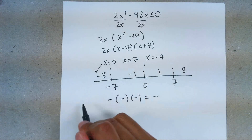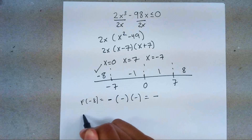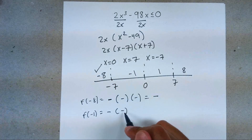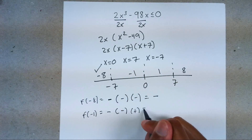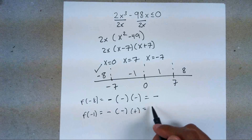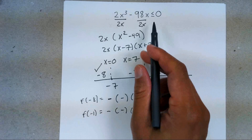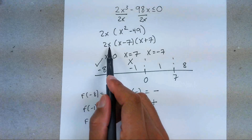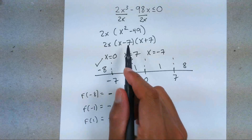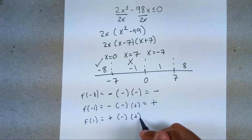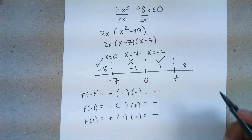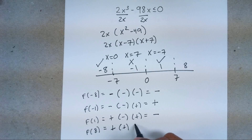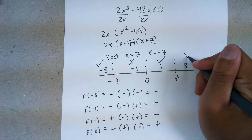Plugging in −1: 2(−1) is negative; (−1 − 7) is still negative; (−1 + 7) is positive. Negative times negative times positive = positive. That's not what we want — we want less than zero — so this doesn't work out. Plugging in 1: 2(1) is positive; (1 − 7) is negative; (1 + 7) is positive. Positive times negative times positive = negative. That works because we want something less than zero. Plugging in 8: positive, positive, positive = positive — not what we want, so it gets an x.